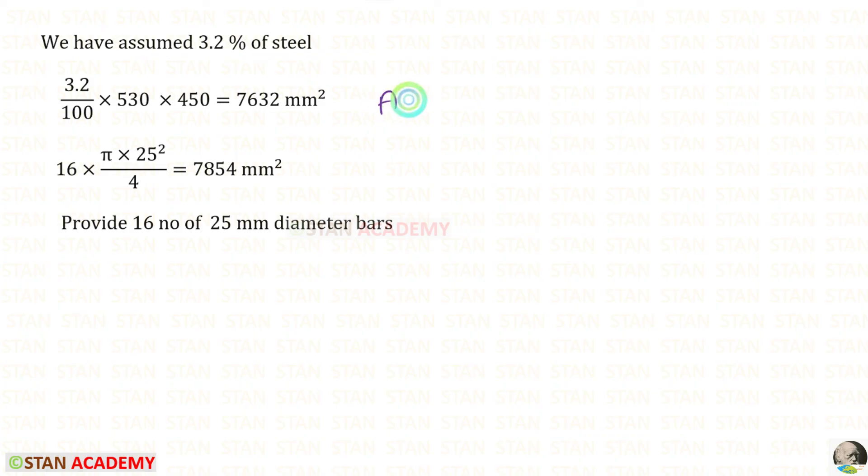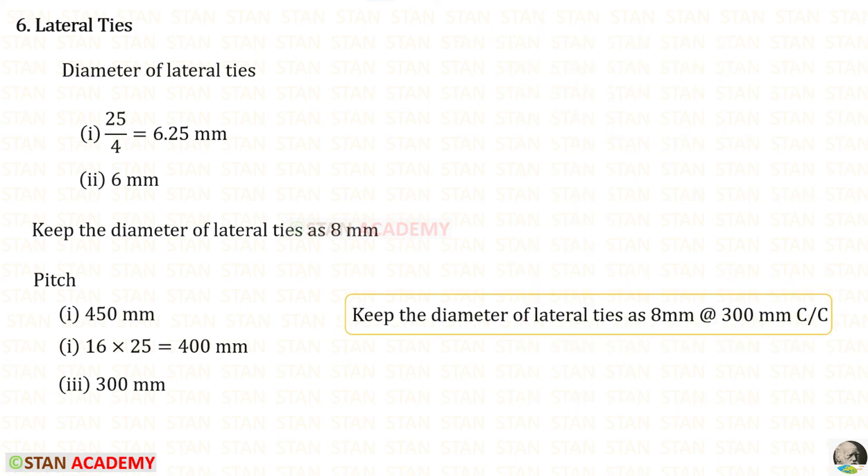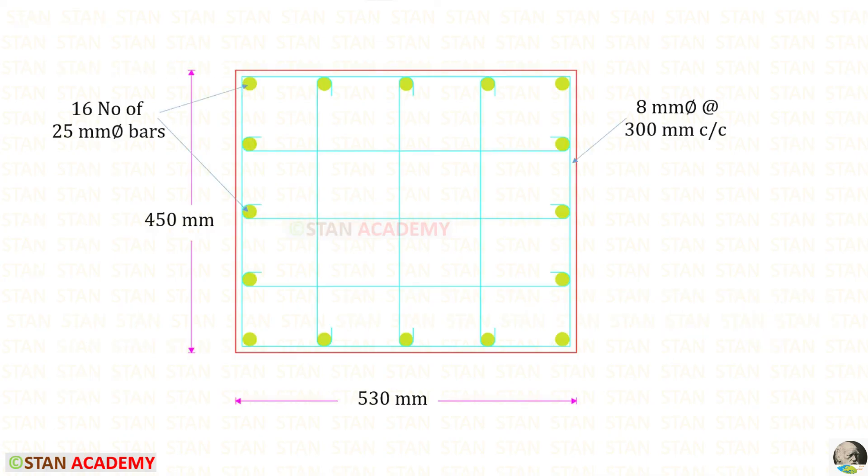Now, we can find the AST. 3.2 upon 100 into D into B. We will get this. Using trial and error method, we can find the diameter and number of bars. Let us provide 16 number of 25mm diameter bars. We are going to keep the diameter of lateral ties as 8mm at 300mm spacing. Here, you can see the reinforcement details.